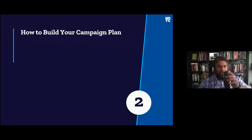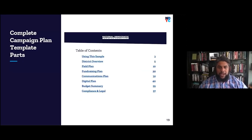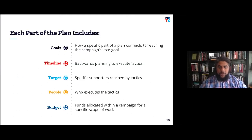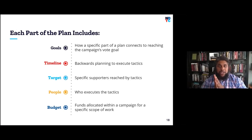Think of your campaign plan like puzzle pieces that all need to fit together and move forward. Each part of your plan needs five things: first, your goals — a specific part of the plan that connects to reaching the campaign's vote goal; second, a timeline; third, your targets — specific supporters for each tactic; fourth, the people who will execute that tactic; and fifth, the budget — funds allocated to do that specific work.